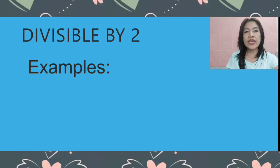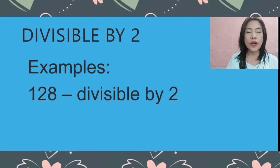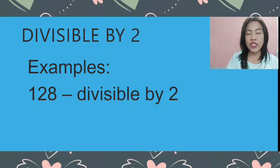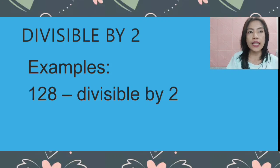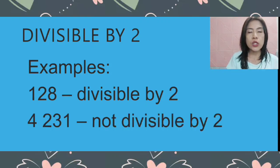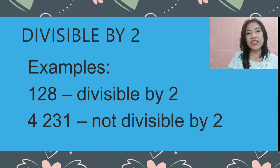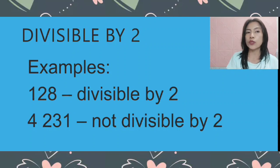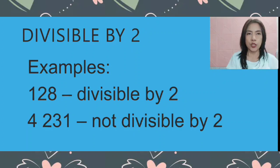Example for divisible by 2: we have 128. The last digit is 8, and 8 is an even number, so it is divisible by 2. While for 4,231, the last digit is 1, which is an odd number, not an even number. So 4,231 is not divisible by 2.